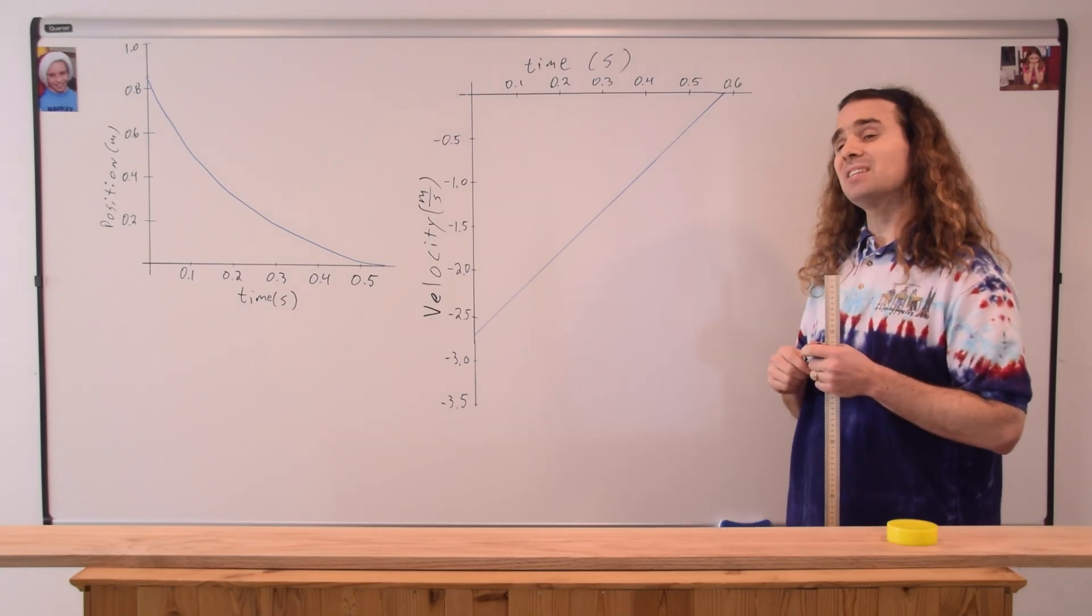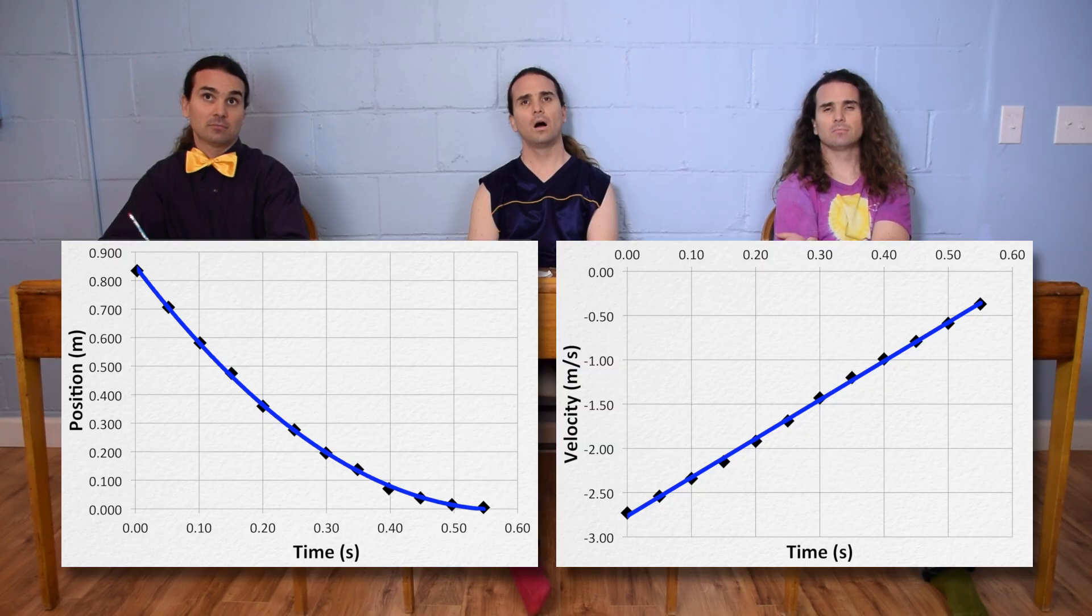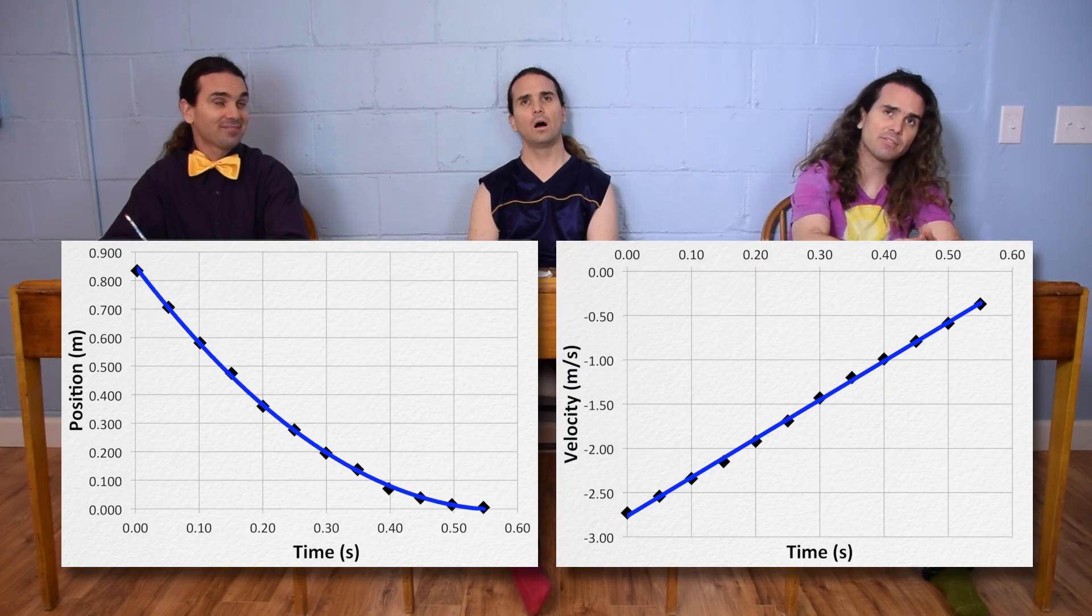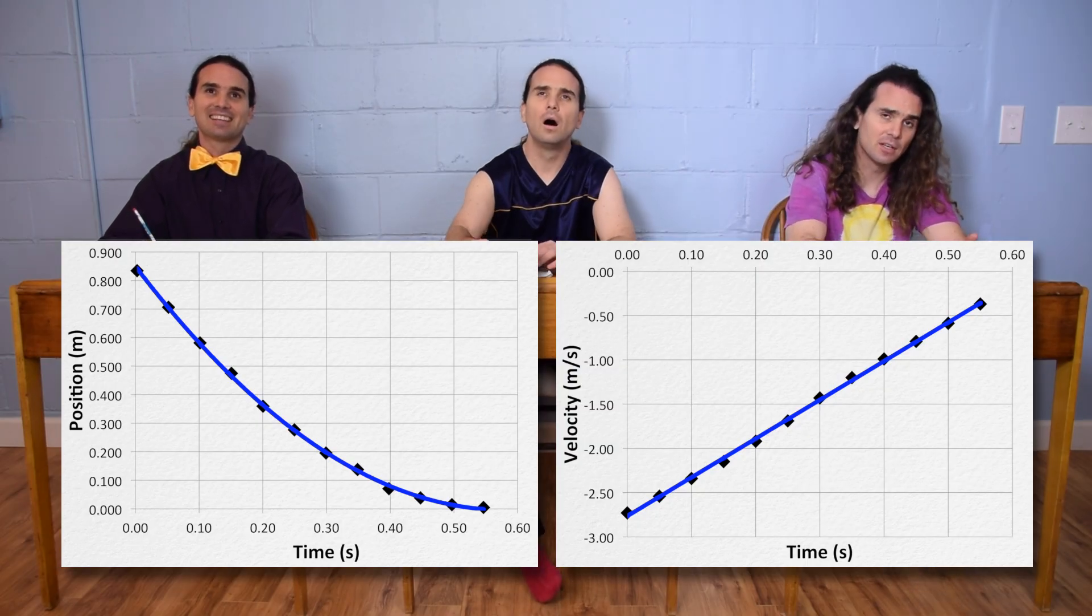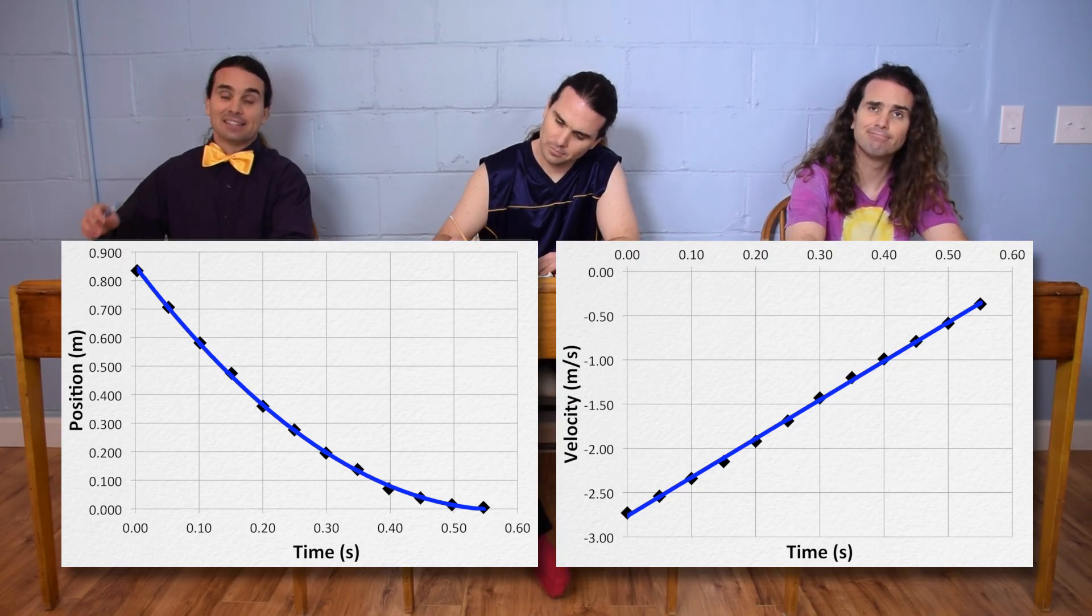And Bo, why is the slope of the velocity as a function of time graph constant? Because the slope of a velocity versus time graph is acceleration and the puck is in uniformly accelerated motion.